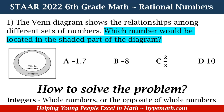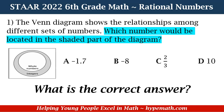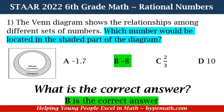Since we know we're looking for integers, we solve the problem by remembering that integers are whole numbers and their opposites — numbers that can be written as both a positive and a negative number. Looking at our answer choices: A is negative 1.7, B is negative 8, C is two thirds, D is 10. What can be written as an integer, and is located only in the shaded part? If you said B, negative 8, you are absolutely right. Good job.